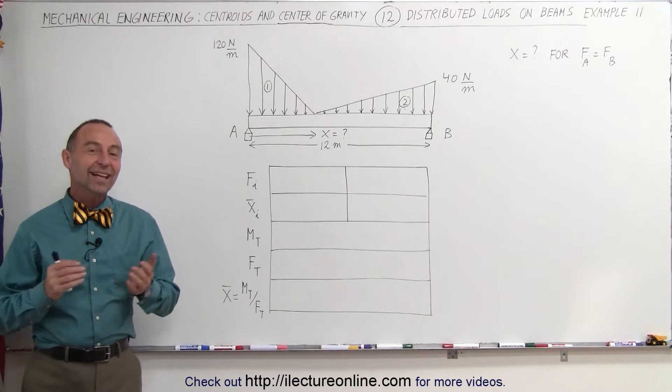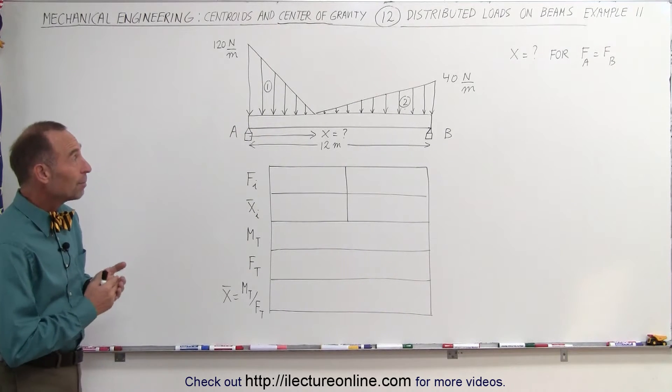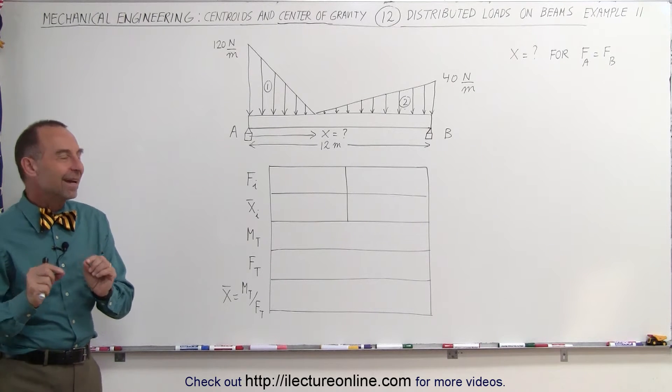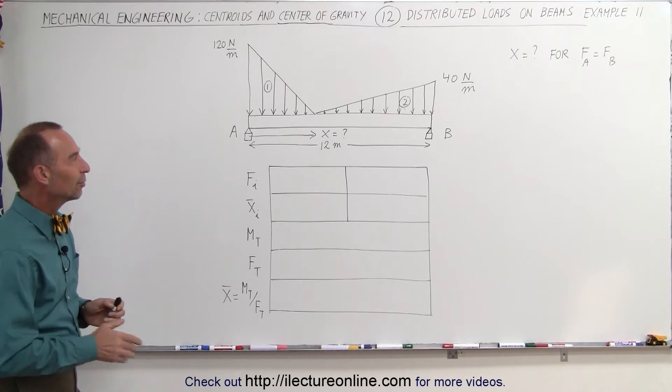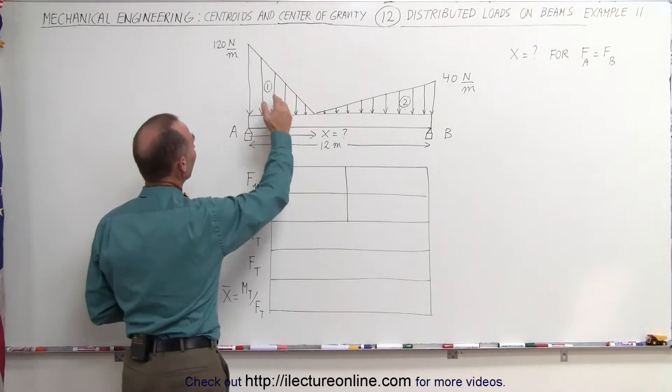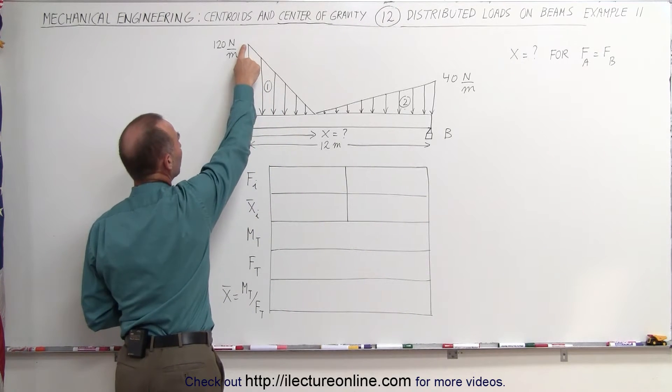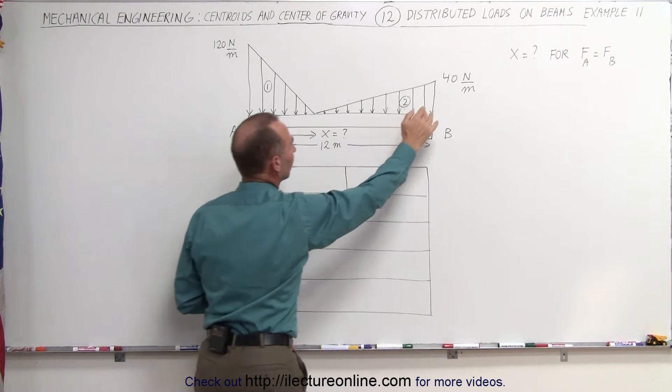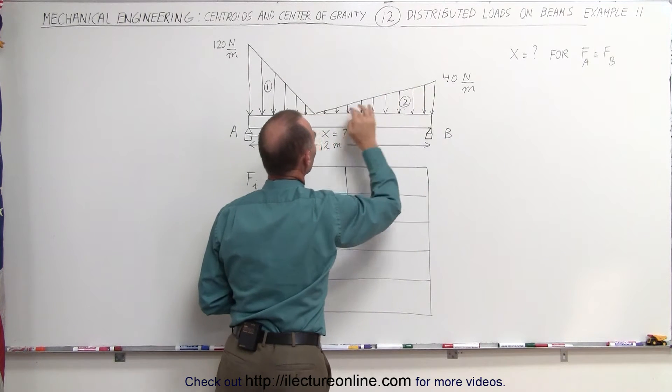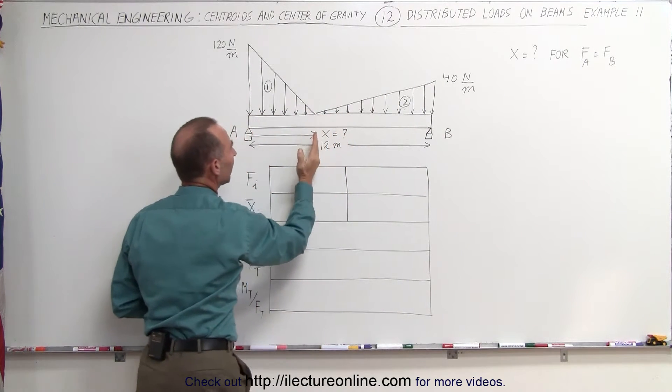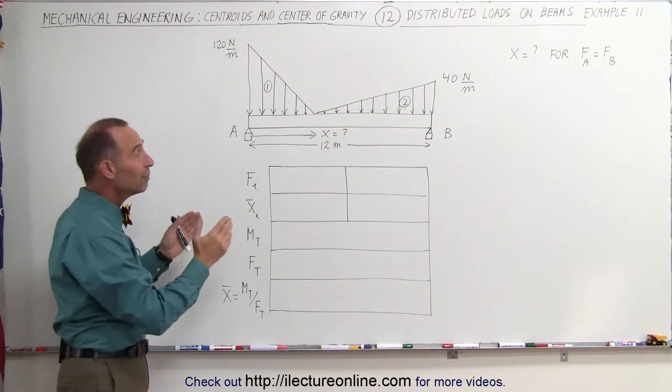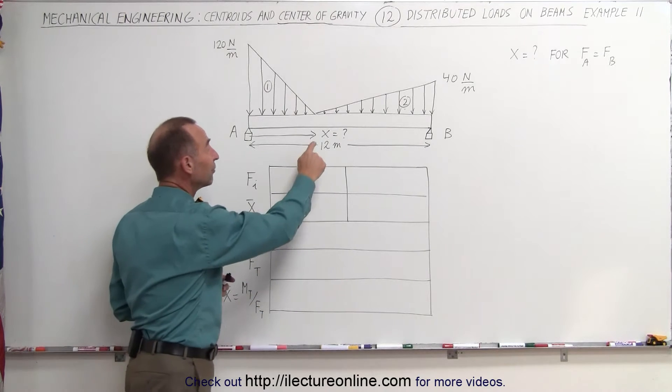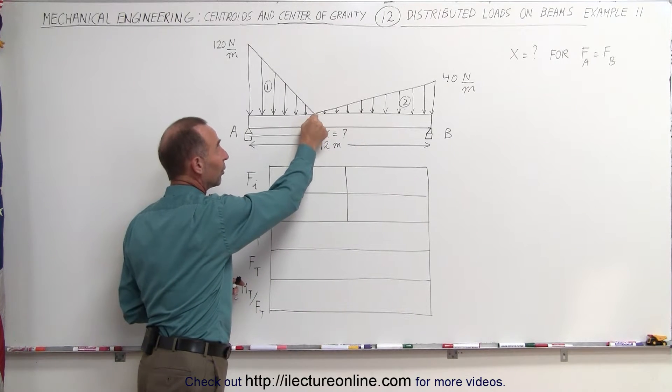Welcome to our lecture online. This next example on the distributed load on a beam will give us a little bit more insight about this particular type of problem. What we have here is we have two load segments. We have one that starts at 120 N per meter and goes down to zero. We have one that starts at 40 N per meter, goes down to zero at the exact same spot, a distance x away from the left side of the beam.